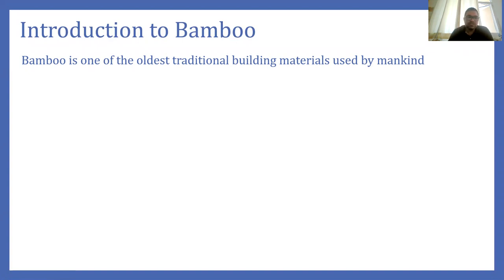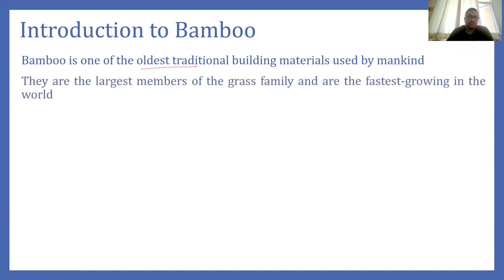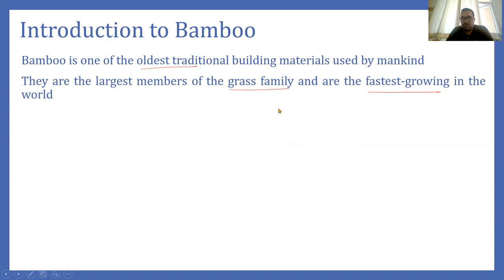This is one of the oldest traditional building materials. Bamboo actually belongs to the grass family and they are the fastest growing plants in the world. A bamboo can grow up to one meter even within 24 hours. That is very fast growing.